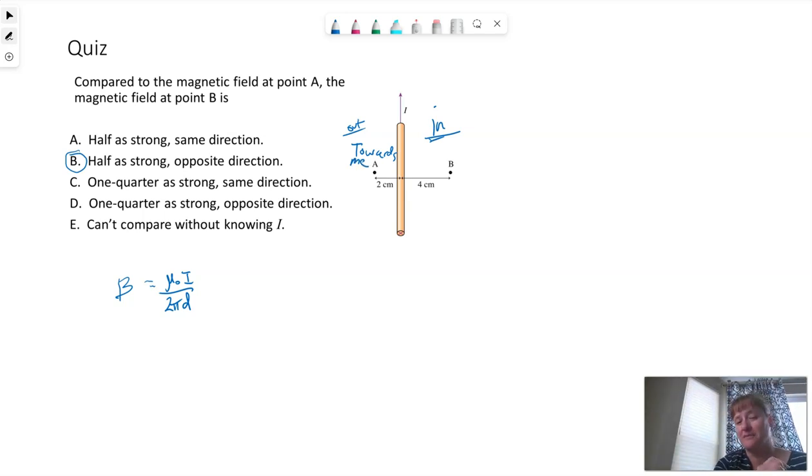So that means the magnetic field over here is pointing into the screen. So on the left, the magnetic field is pointing towards me, and on the right, it's pointing away from me. So out of the screen on the left side into the screen on the right side. So the magnetic field is circling this wire.